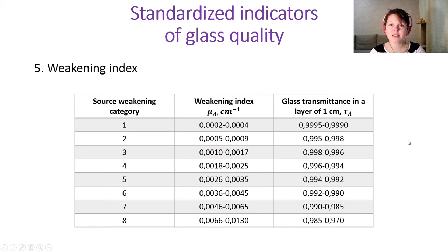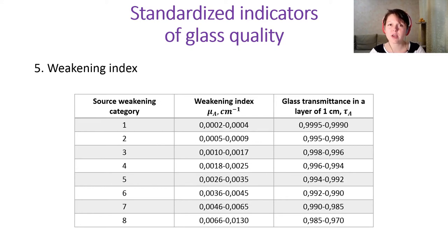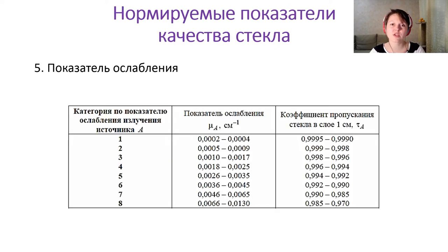The next indicator is the weakening index, which shows how light weakens while passing through the glass blank. It is very close to the glass transmittance coefficient.